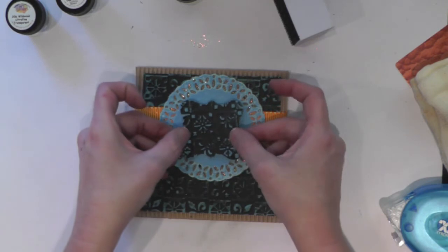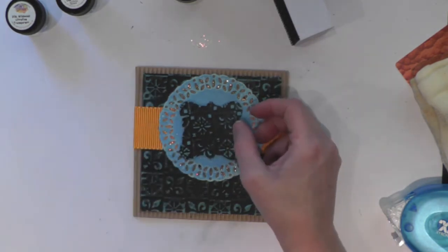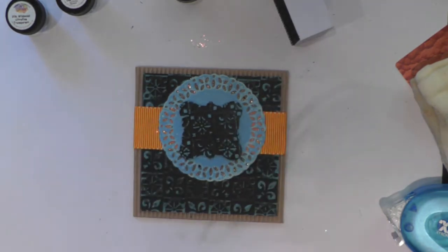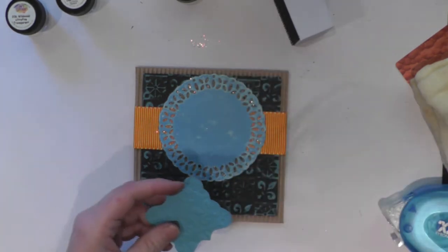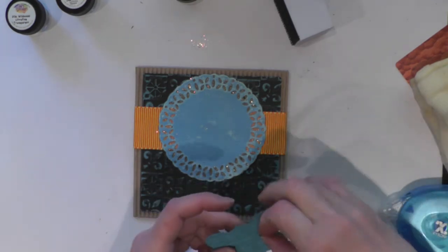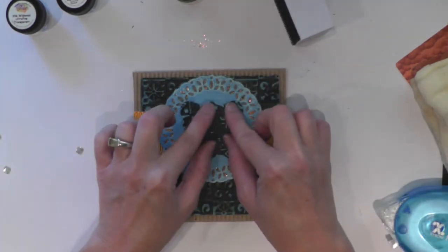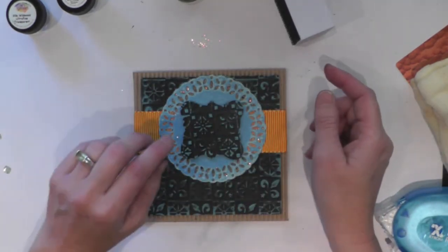Now we're going to give a little dimension. I'm just going to use a foam dot in the back, or two, or four. Now it's added on to the center.